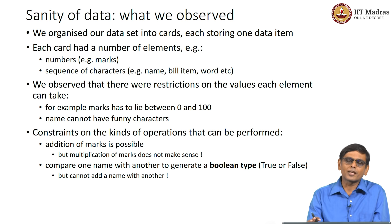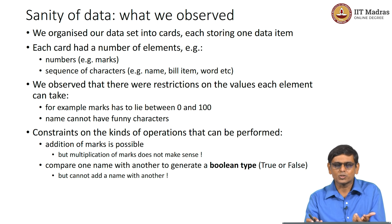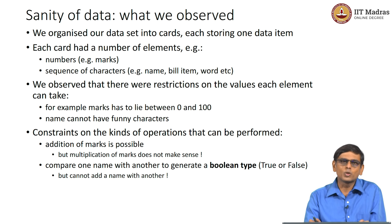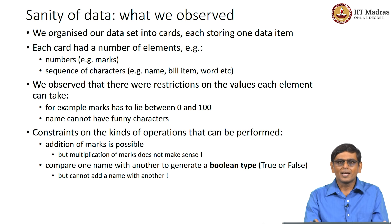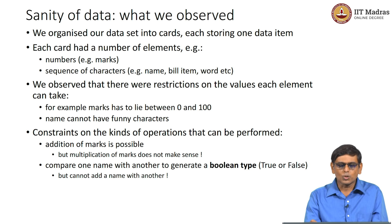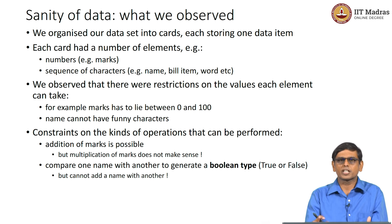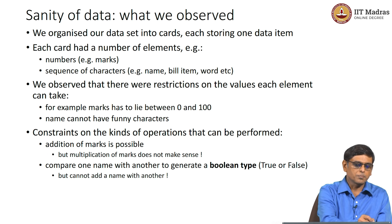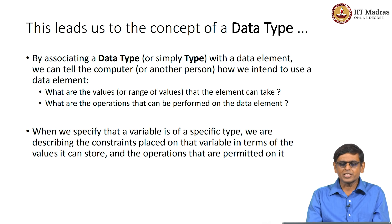Similarly, for names you can compare two names to see whether they are the same — checking if all characters match, or handling cases where the same name is written in different ways such as first name last or with initials. But addition of names does not make sense. So, for every data element there is a valid set of values it can take — either a range or a discrete set — and certain operations are allowed while others are not. In computer science and programming, this is represented using the concept of a data type.